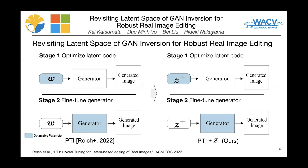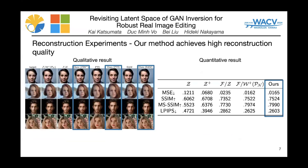PTI inversion is another popular GAN inversion framework which has a two-stage algorithm. It first optimizes latent code W and then fine-tunes the generator. Our extension of PTI optimizes latent code G+ and fine-tunes the generator.